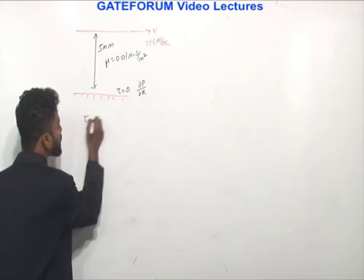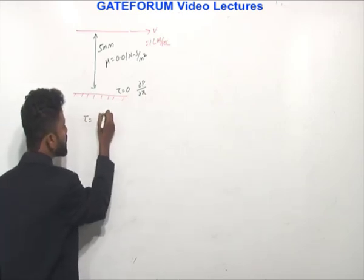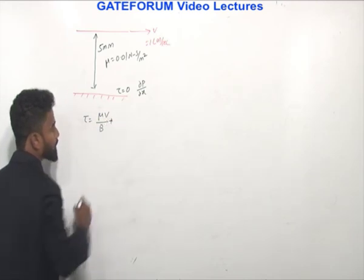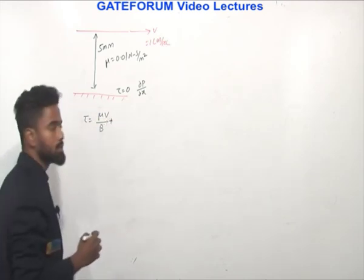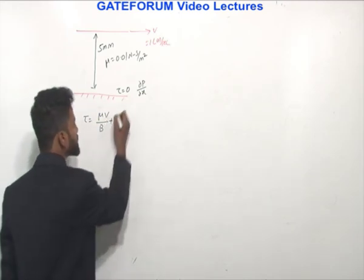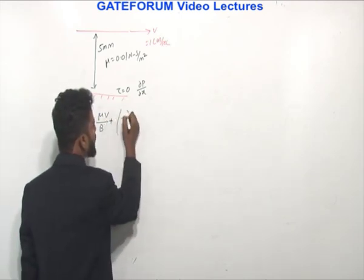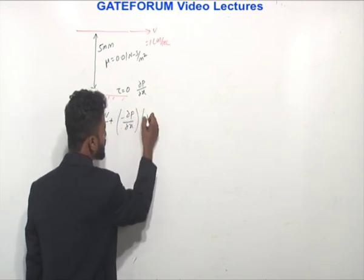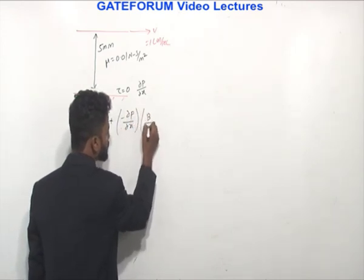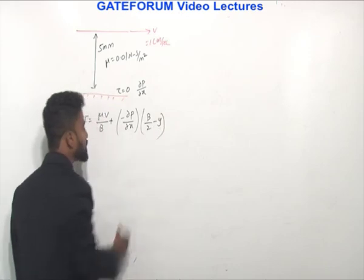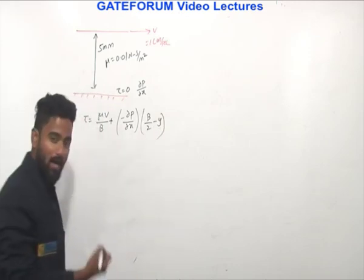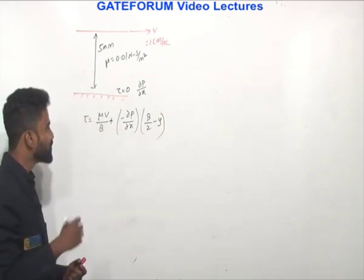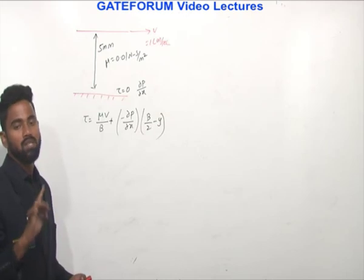The shear stress τ in Couette flow is given by: τ = μ(V/b) ± (∂p/∂x)(b/2 − y). I am directly writing the equation for Couette flow — you can prove it, but it is better to remember it to save time.